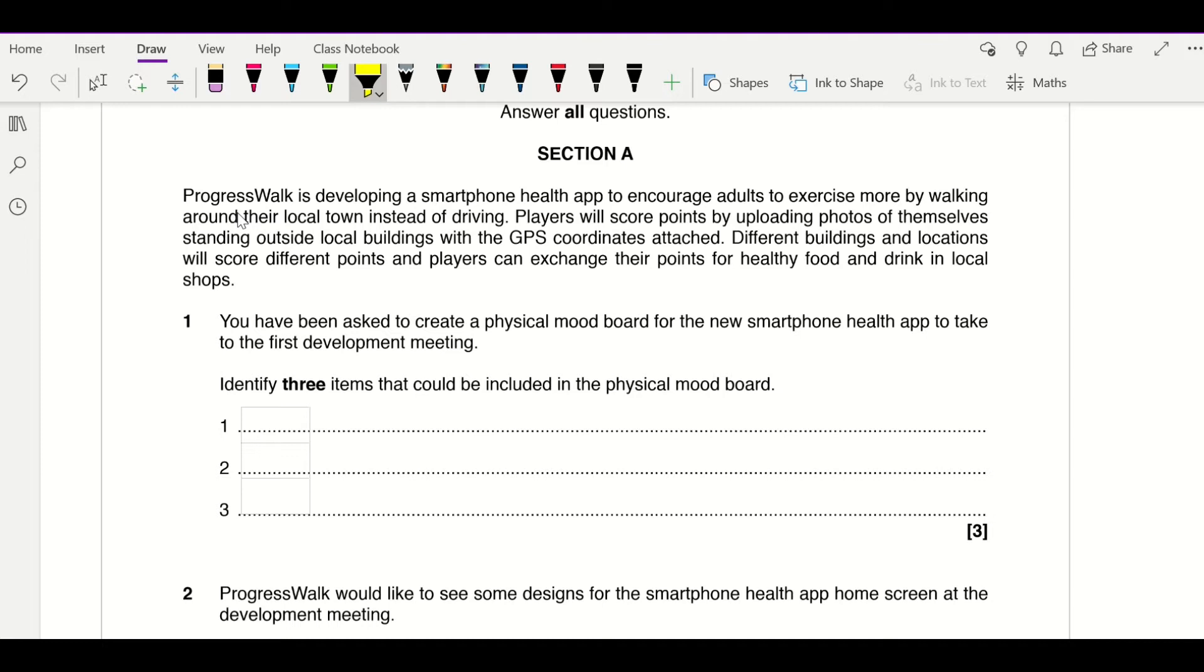You can exchange those points for healthy food and snacks in the local area. So the first question says you've been asked to create a physical mood board. First we need to make sure that we understand this is talking about a mood board and think about what's included on a mood board, so things like pictures, text, fonts, annotations, materials, fabrics, textiles, all that kind of stuff, and obviously titles as well.